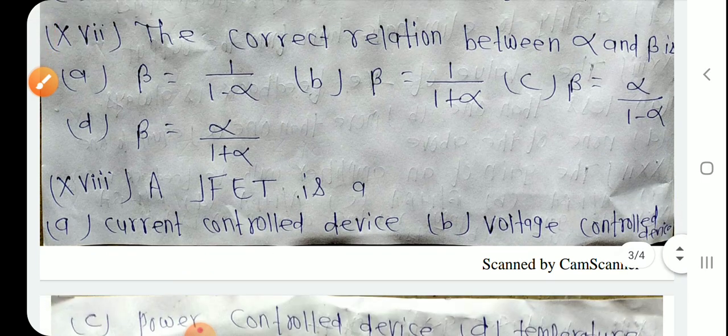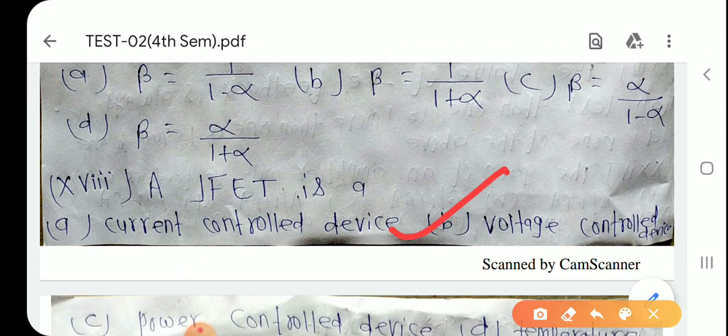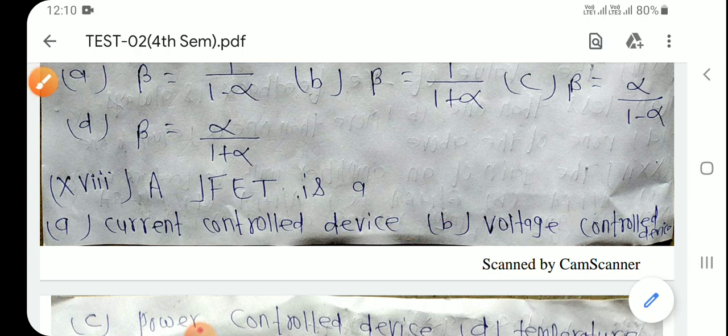JFET एक voltage control device है, और BJT एक current control device है। BJT को current control device इसलिए बोलते हैं क्योंकि output current, input current से control होता है। और JFET में output current, input voltage से control होता है, इसलिए इसको voltage control device बोलते हैं।